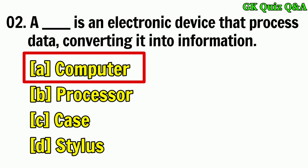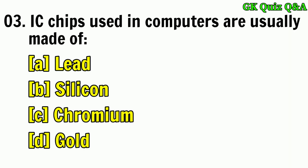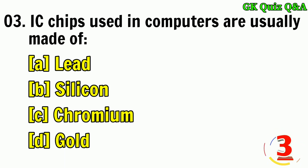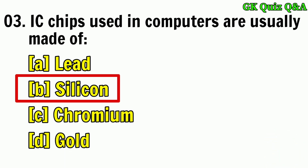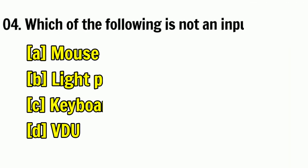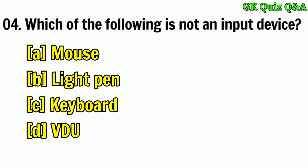IC chips used in computers are usually made of? Answer: B — Silicon. Which of the following is not an input device? Answer: The monitor (video display).